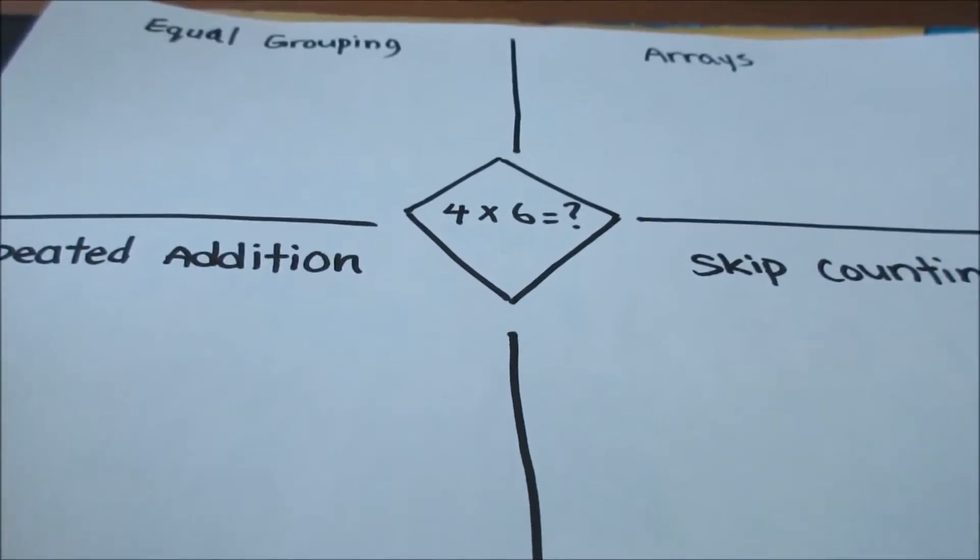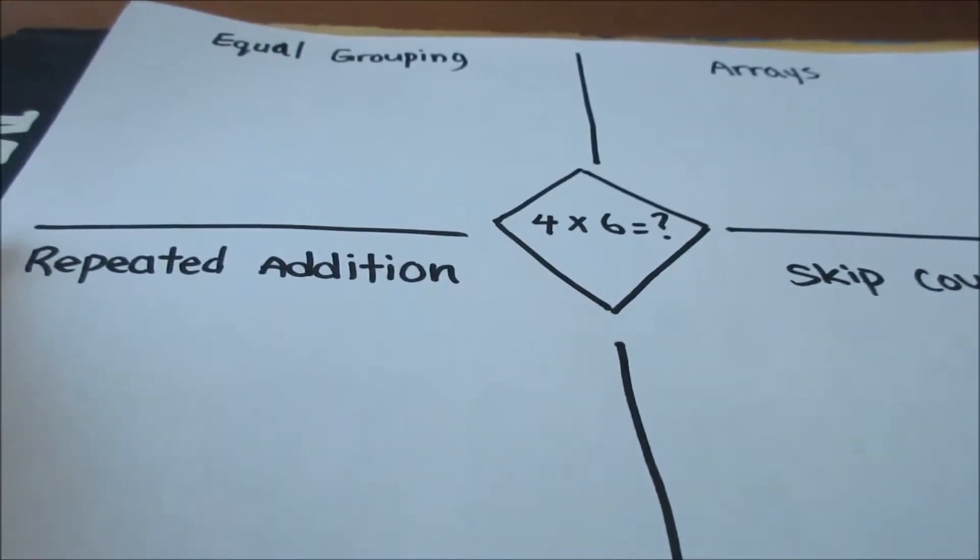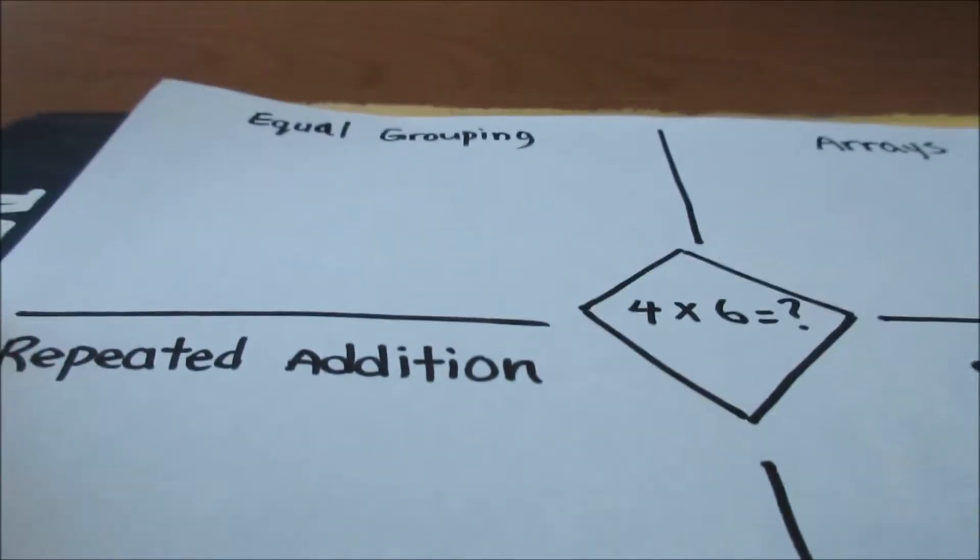We're going to take a look at four ways to show multiplication. We have equal grouping, arrays, repeated addition, and skip counting.